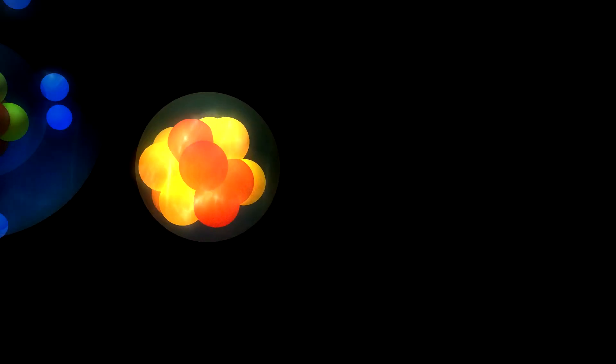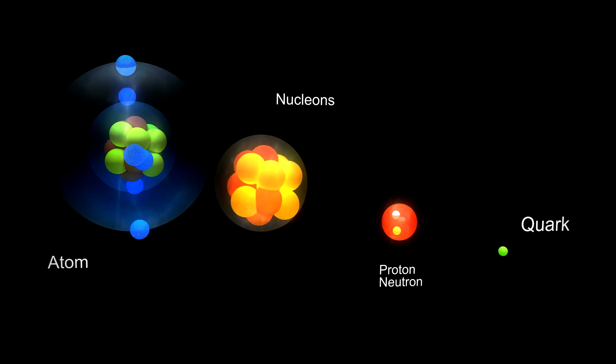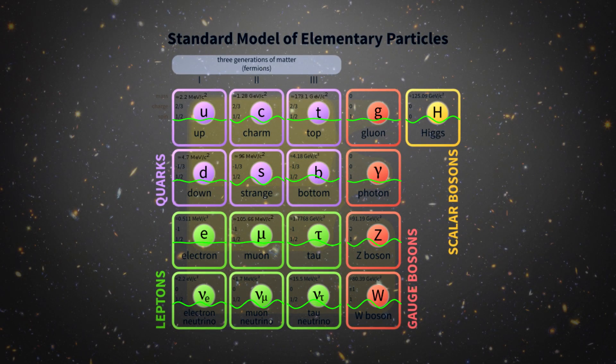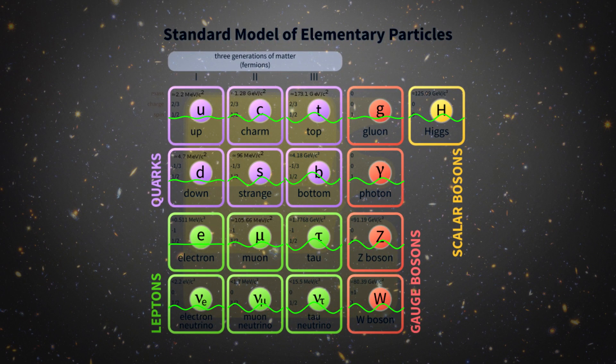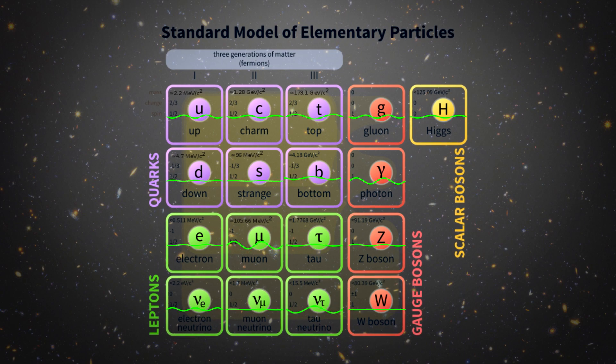String theory dispenses with the idea that the tiniest particles in nature are points. Rather, string theory hypothesizes that at the smallest scales, nature is made of tiny vibrating bits of energy in the shape of filaments, or strings. According to string theory, all the elementary particles in the standard model are not points, but rather vibrating strings. Different vibrations of a string create the different particles.